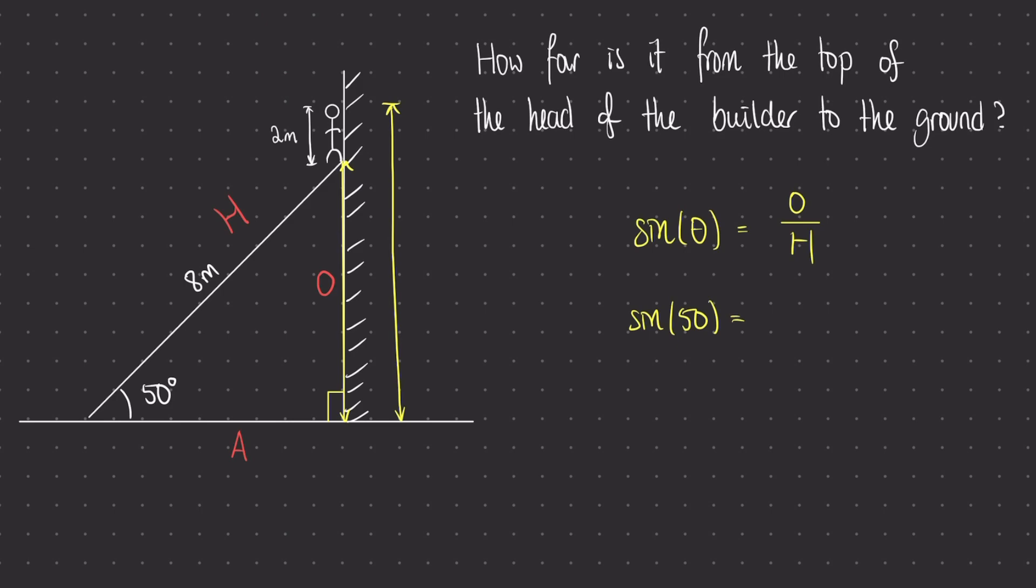O is an unknown length, so now let's just label it x and take H to be 8. Rearrange this equation by timesing both sides of the equation by 8. We can place this into our calculator now.